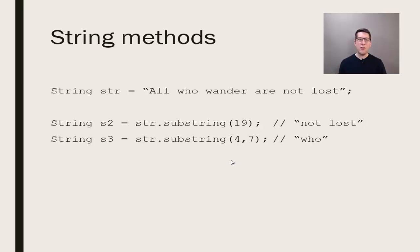The second version has two integers as inputs and returns the set of characters from the first index to the second, not including the endpoint. In this example, we start at character 4, which is the W in "who." Character 5 is the H, character 6 is the O, and character 7 is the whitespace. It will not include that whitespace at character 7, even though 7 is the number that we passed to the method.